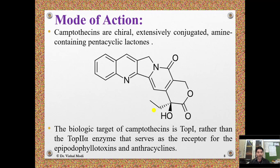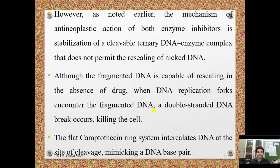Camptothecins act through topoisomerase 1 inhibition, while epipodophyllotoxins and anthracyclines work through inhibition of topoisomerase 2 alpha. However, the mechanism of antineoplastic action of both enzyme inhibitors is stabilization of a cleavable ternary DNA-enzyme complex that does not permit resealing of nicked DNA. When DNA replication forks encounter the fragmented DNA, a double-stranded DNA break occurs, killing the cells. The flat camptothecin ring system intercalates DNA at the site of cleavage, mimicking a DNA base pair.